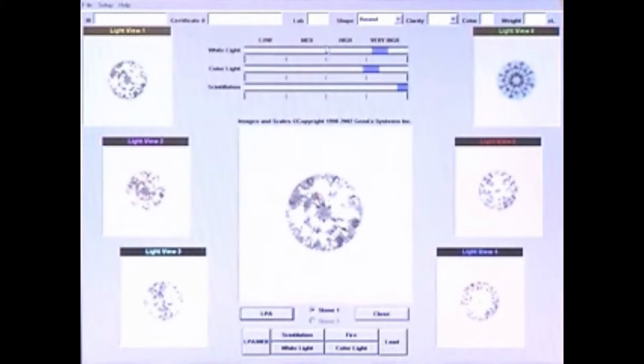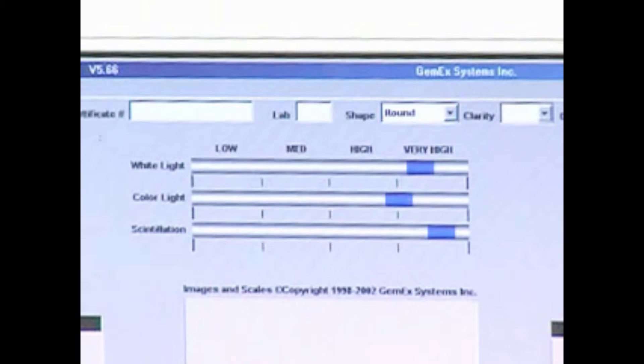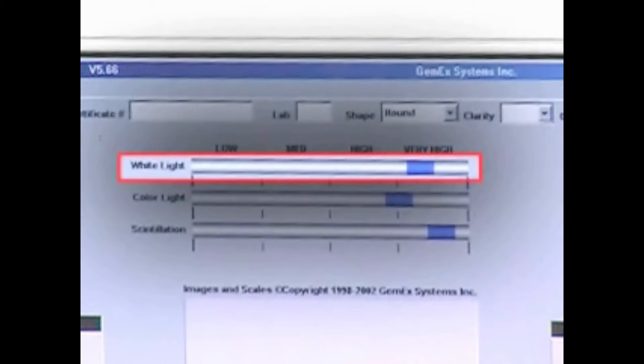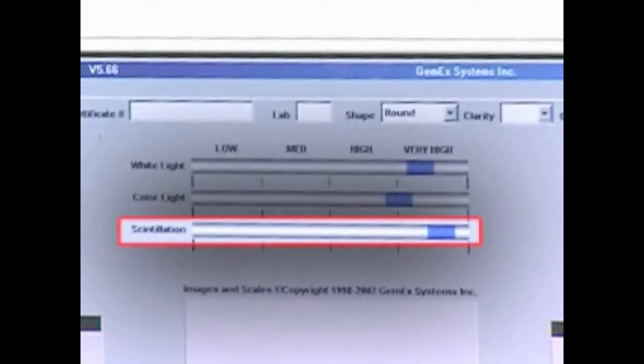The appearance of light can be broken into many different categories. GemX breaks this light into three easily understood categories: bright white light, bright color light, and scintillation or sparkle.